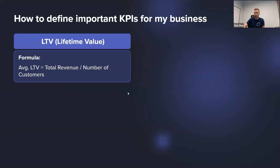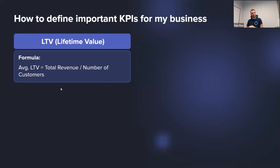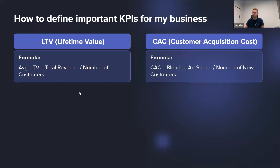Let's look at a nice formula to understand all these metrics. Lifetime revenue: total revenue in a specific time frame divided by the number of customers — this tells us what each customer generates on average over time. Customer acquisition cost: blended ad spend divided by the number of new customers. A lot of people use total customers, which is a mistake. When we talk about customer acquisition, we can only acquire a customer once, so we specifically divide by new customers.